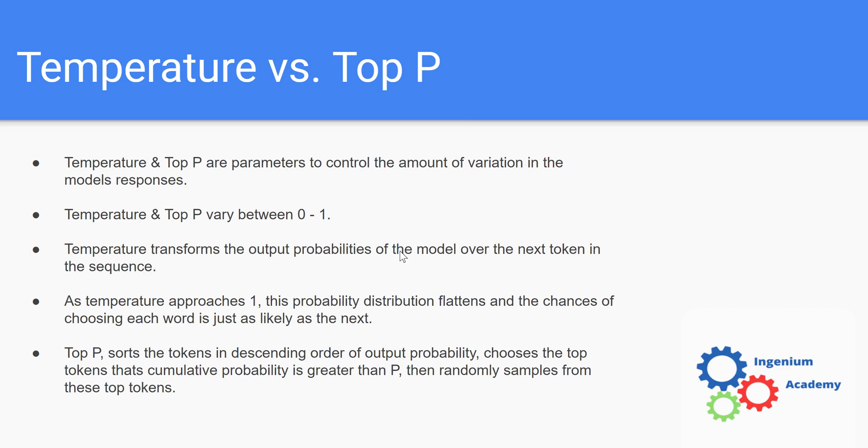So for a given sequence of words, it outputs a probability distribution over the next most likely token. If we want to change the temperature, temperature is a way for us to change that probability distribution. You can think of it as temperature gets closer and closer to one.